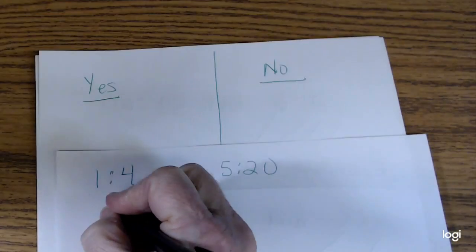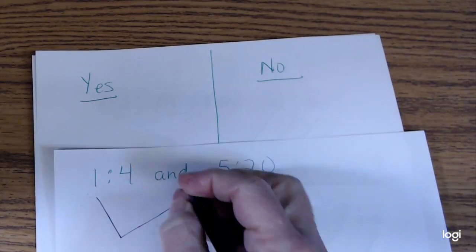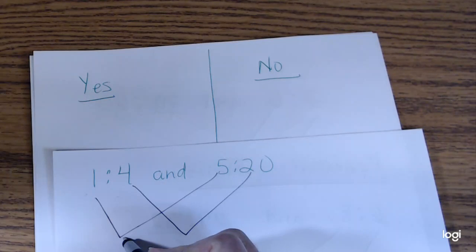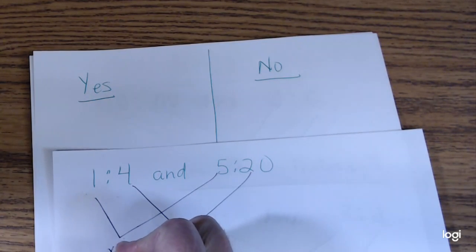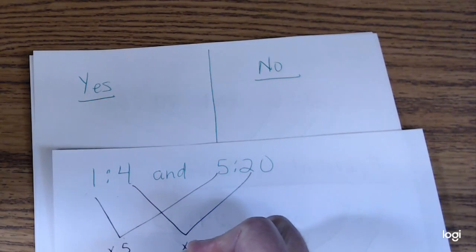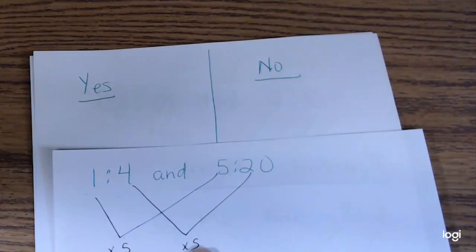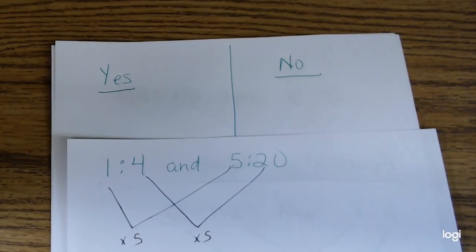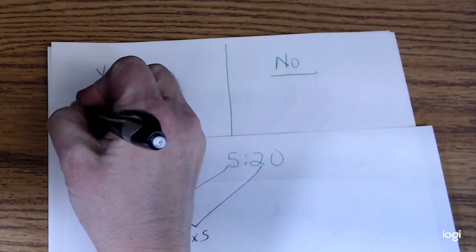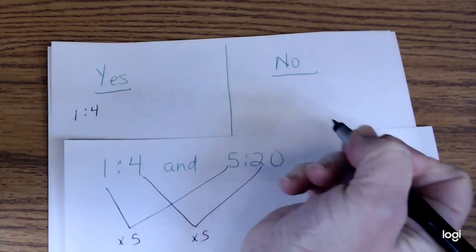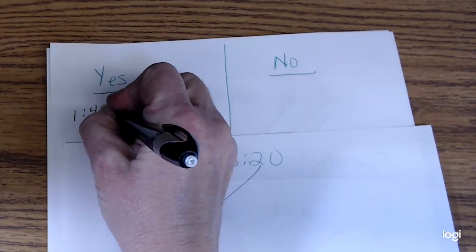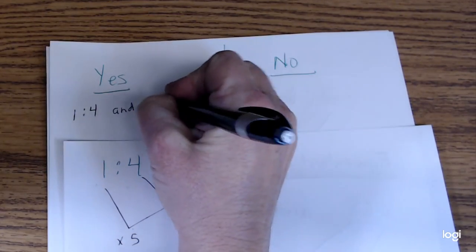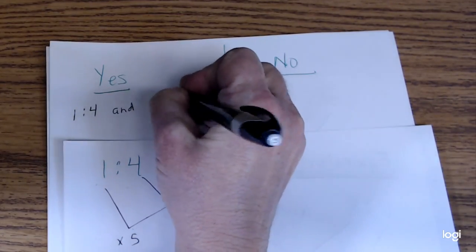First number to first number: 1 times 5 is 5. Let's see if this is true — 4 times 5 is 20. That is yes, so I would write over here 1 to 4 and 5 to 20 on the yes side.